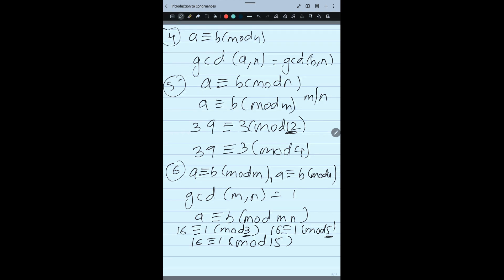Now next property is very important. Next two properties are very important where you can do little mistakes sometime in a hurry. So please understand. If you have A congruent B mod N, you can write CA congruent CB mod CN, right?